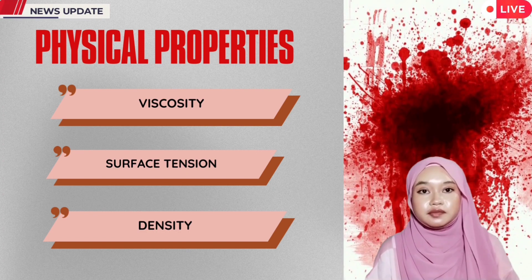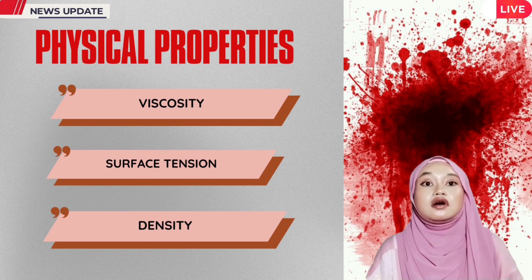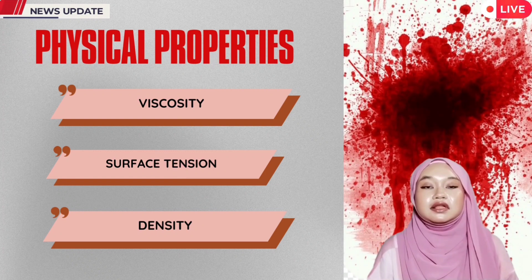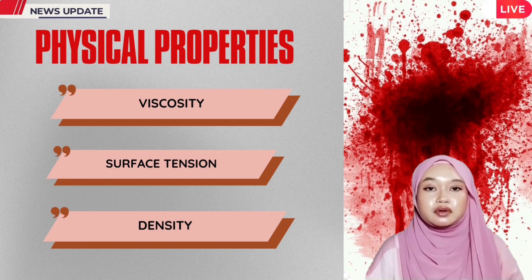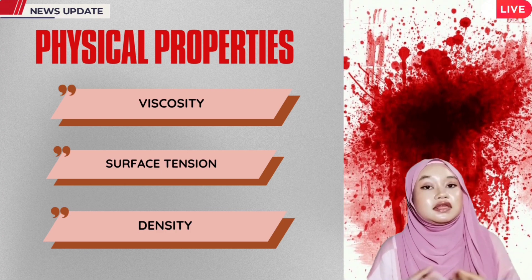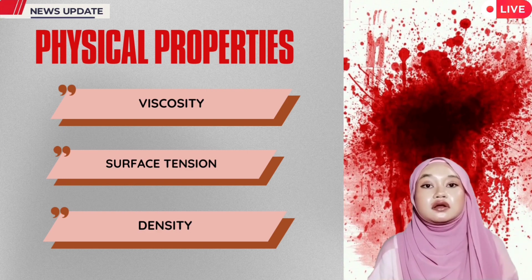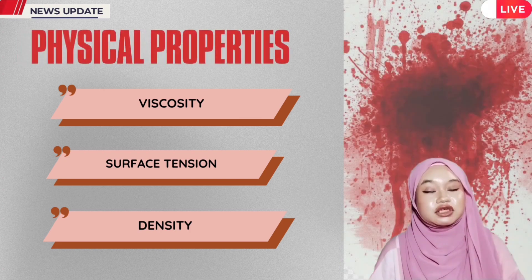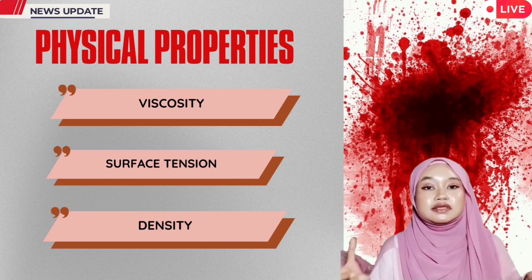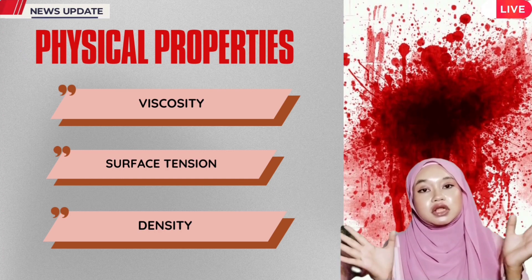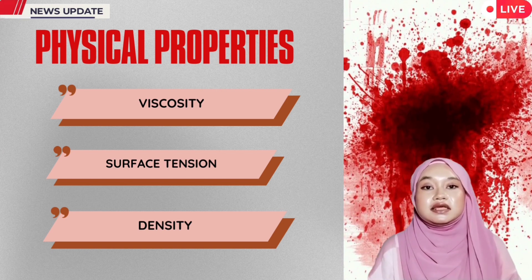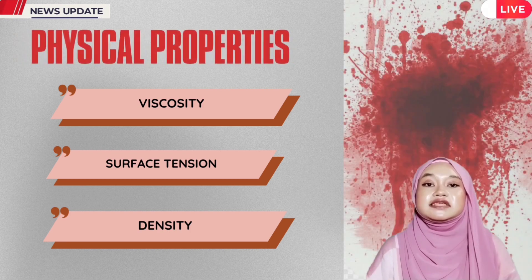Surface tension describes the energy required to change the shape of a fluid when it comes into contact with another fluid. For example, blood and air play a big role in the formation of spherical blood droplets as they fall, as well as the way they react when they hit a surface. Surface tension can also be affected by outside factors such as temperature and the presence of chemicals in the blood. The third measurement is density, which represents a fluid's mass per unit volume, with water as the standard reference at 1 gram per milliliter.